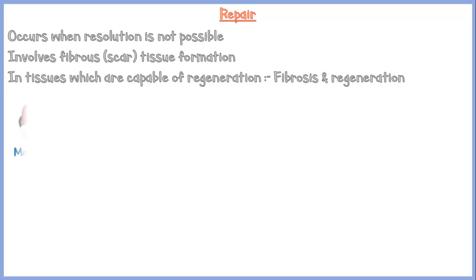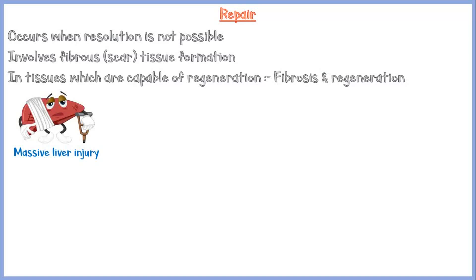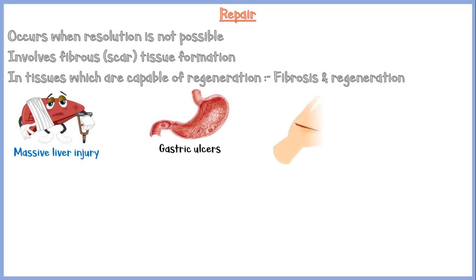For example, in massive liver injury, the extracellular matrix framework will be damaged, so during the healing process, both regeneration and scar tissue formation will occur. In gastric ulcers, the basement membrane of the gastric mucosa and the underlying extracellular matrix will be damaged; therefore, healing will occur by repair. Also, in deep skin wounds that penetrate both the epidermis and dermis, healing occurs by both regeneration and fibrosis.